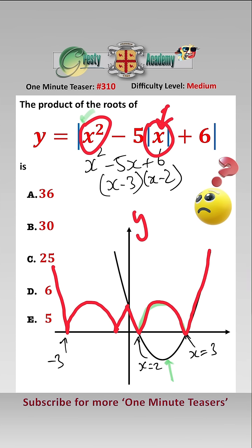This one by symmetry is at minus 3. This one is at minus 2. This is at 2 and this is at 3. And the product of the four roots is equal to 36 which is answer A.